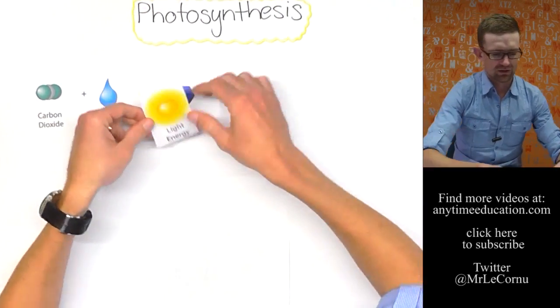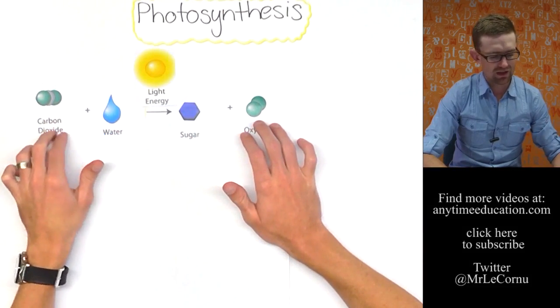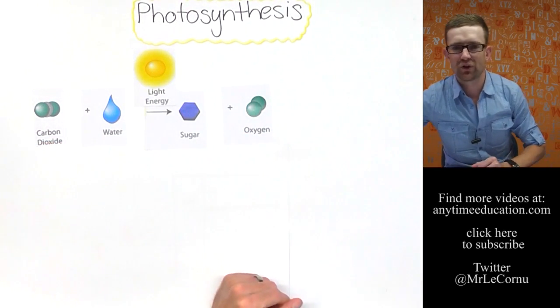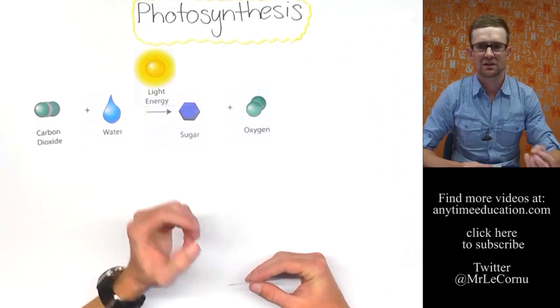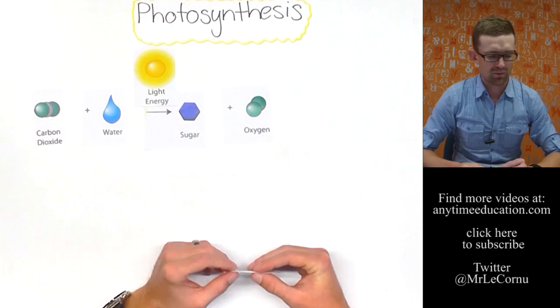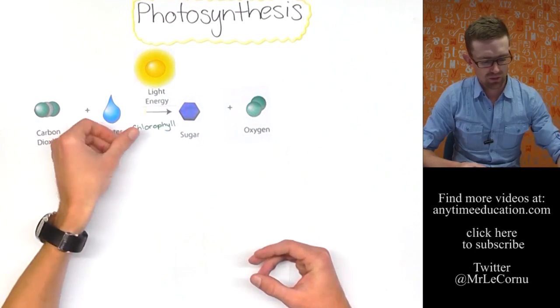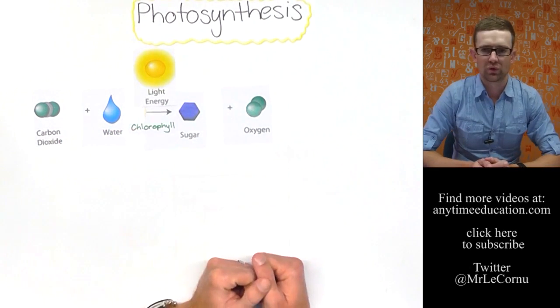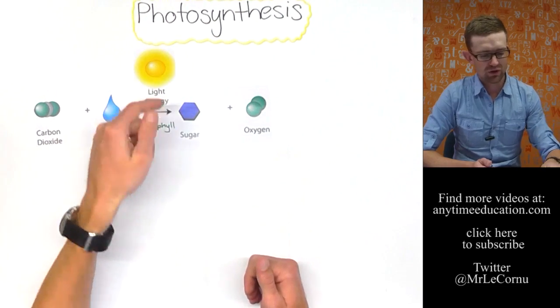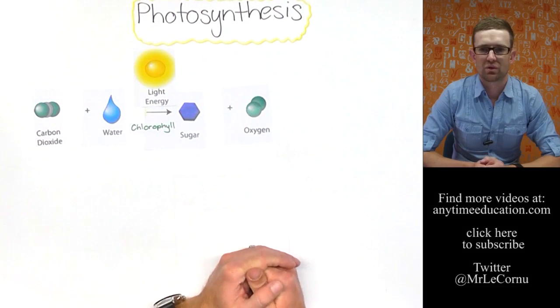But there's two really important factors that are needed to make sure this happens. One of those as we've already talked about is light energy. Without light energy that process simply cannot take place. And the other one is a photosynthetic pigment to absorb the light energy. And without that photosynthetic pigment the light energy can't be trapped and it can't be used. The most common photosynthetic pigment is chlorophyll. We put those conditions above and below the arrow to show that this reaction won't occur unless we have those two factors present.